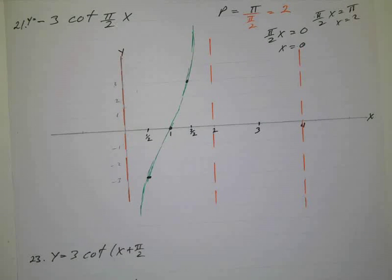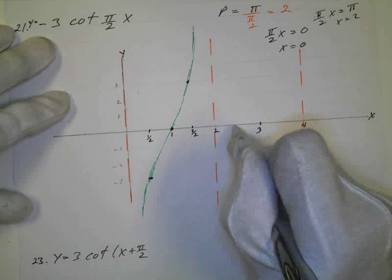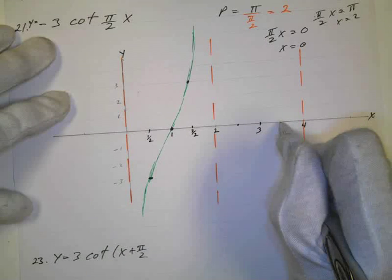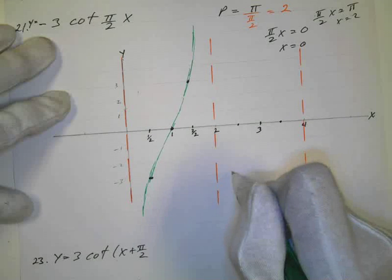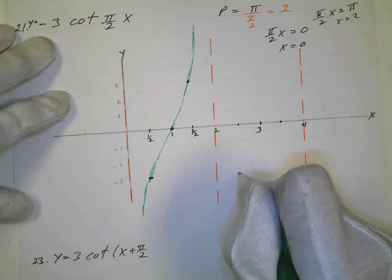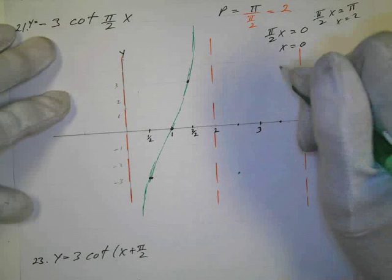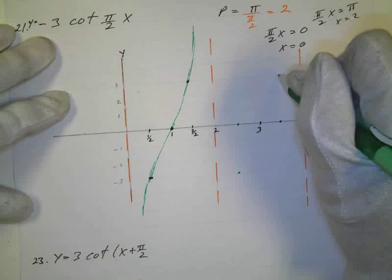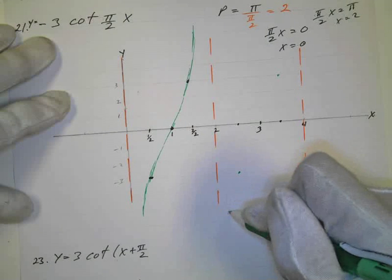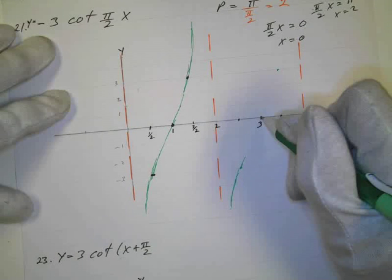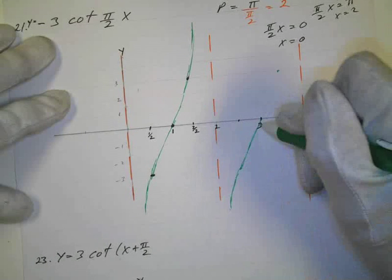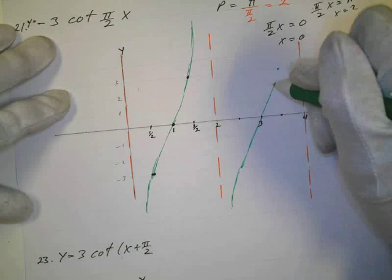And then my second one's over here, second period. Same thing. This is my center, so I go halfway between the center and the asymptotes for my checkpoint. And it's going to line up and be the same as these. So I've got this one at negative 3, and this one at 3. So once you have one, it's easy to draw the second one.